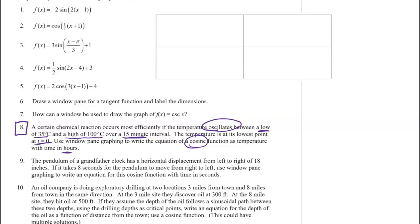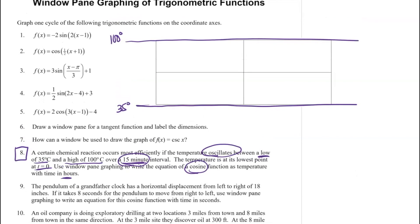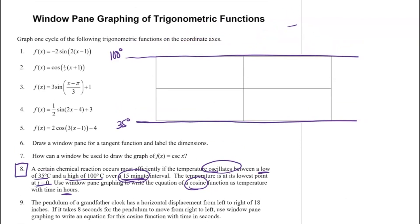I'm going to use my windowpane here. Because I'm going from a low of 35 and a high of 100, this lowest point is happening at 35 degrees and the highest point is happening at 100 degrees. Over a 15 minute interval, it takes that long to go from a low to a high. So this section, half of that from a low to a high, is going to be 15 minutes. Then it's going to take me another 15 minutes to go back down. If I'm going from low to high back to low again, it's going to take me basically 30 minutes.